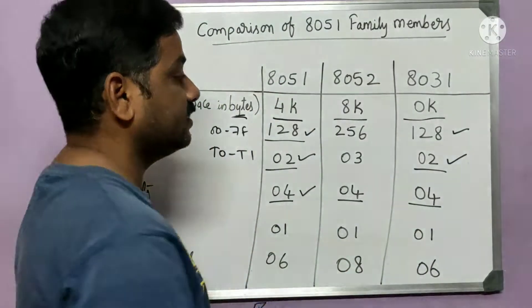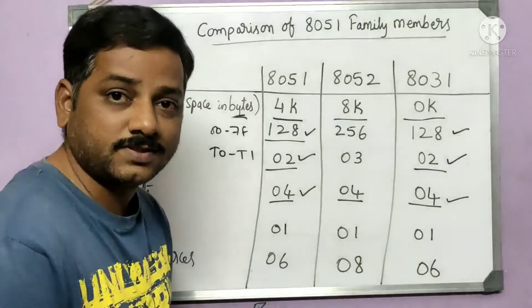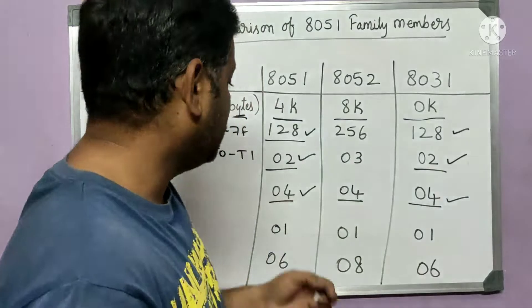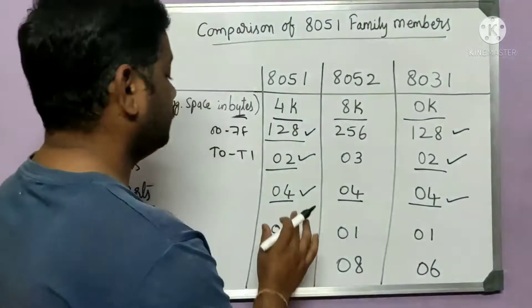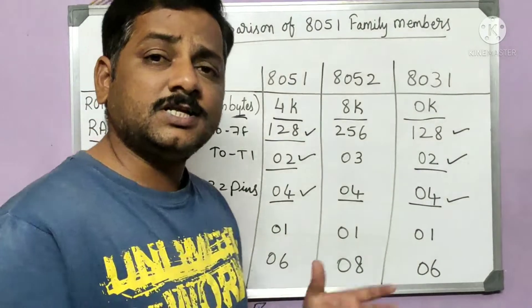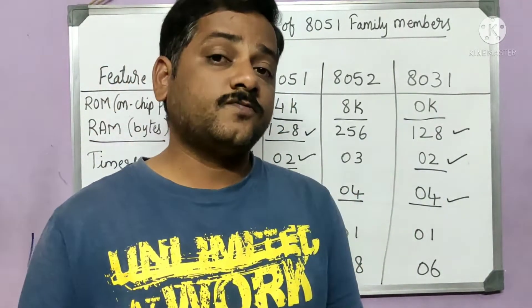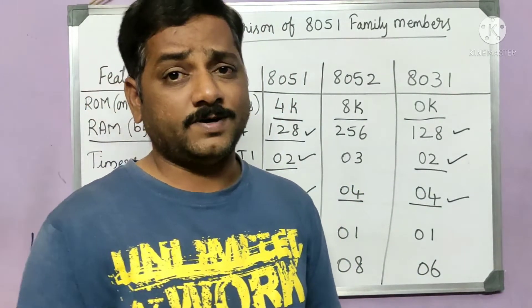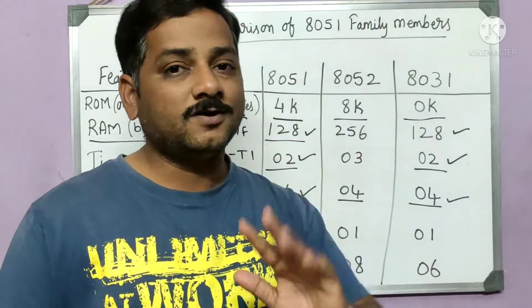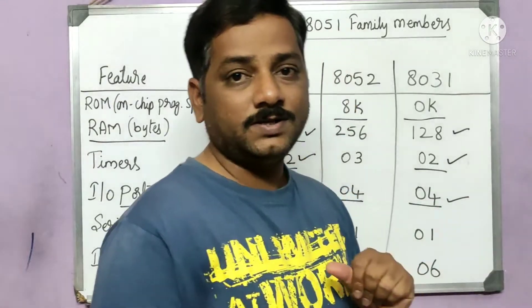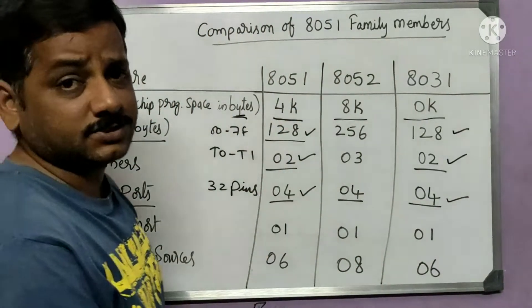For input/output ports: the 8051 has four ports, and all other ICs also have four ports — the 8031 and 8052 each have the same four ports. Each port is 8 bits wide (8 pins), so there are 32 pins reserved for ports in total. The remaining 8 pins are for other important functions, which we will discuss when we cover the pin configuration.